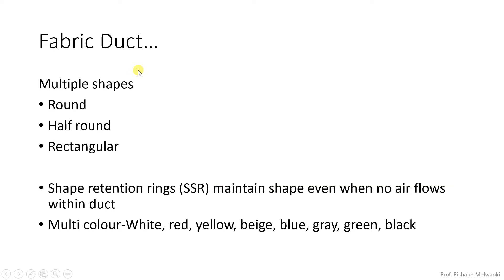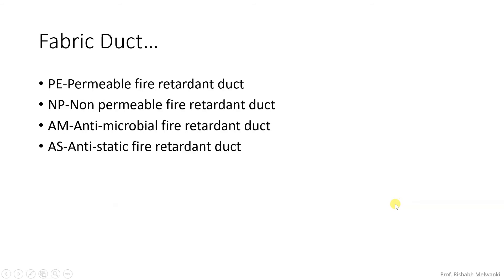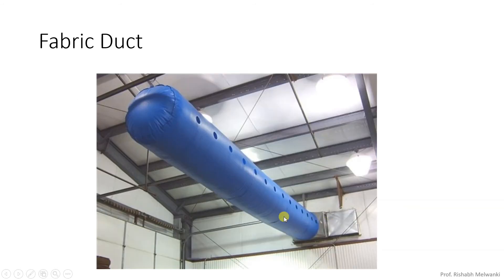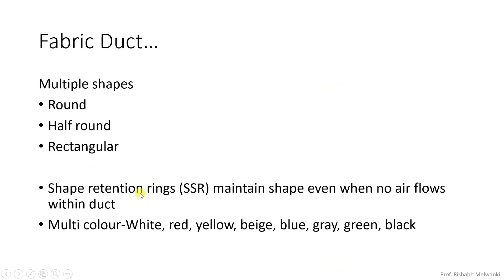There are different shapes available in fabric duct — like round, half round, and rectangular. To maintain the shape, retention rings (SSR) are used to maintain the shape when there is no air flow inside the duct, so it will not be deflated. The retention rings are used and this fabric duct is available in multiple colors — white, red, yellow, blue, gray, etc.